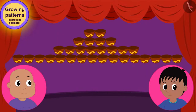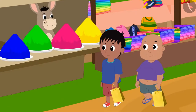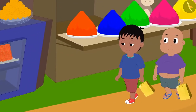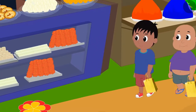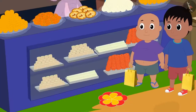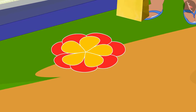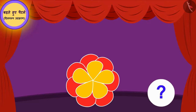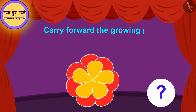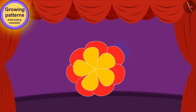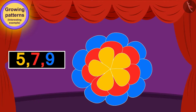Raju bought the decoration of the diyas. Now Raju and Bablu have come to Appu's shop to buy sweets. Such a beautiful rangoli is made in front of Appu's shop! Children, can you carry forward the growing pattern of the rangoli at Appu's shop?